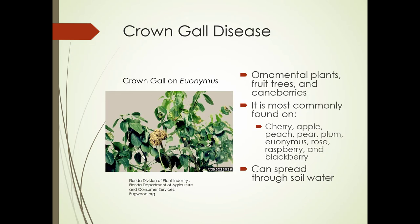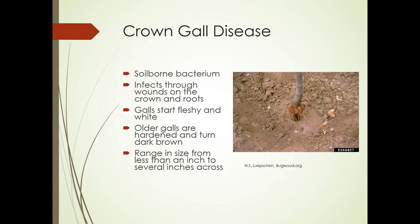Crown gall disease can happen on ornamental plants, fruit trees, and cane berries. Most commonly found on cherry, apple, peach, pear, plum, euonymus, rose, raspberry, and blackberry. It can spread through soil water. It's a soil-borne bacterium that comes in through wounds on the crown and roots. The galls start out fleshy and white. This crown gall on apple shown here is an older gall — it's hardened and turned brown, ranging in size from less than an inch to several inches across.